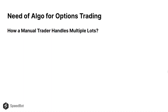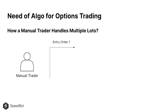Let's understand the difference between how a manual trader handles multiple lots or positions versus how a smart trader does. There are very few inputs that a manual trader can manage when it comes to order punching. Let's assume our manual trader is punching an entry order — the first order — and has punched an entry order of 50 lots in a Nifty options contract.